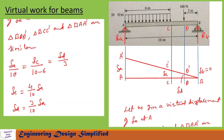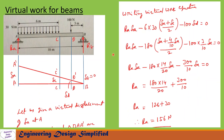From these similar triangles we can write: delta_A / 10 = delta_C / (10 − 6) = delta_D / 3. From this equation we find delta_C and delta_D in terms of delta_A: delta_C = (4/10) × delta_A, and delta_D = (3/10) × delta_A.